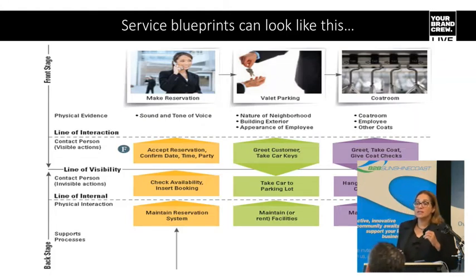Why highlight them? So that you know to fix them, so that you can mitigate the risk, or so that you've got a backup plan and you know what to do when things go wrong. That's one way that a blueprint can look — and they can look in lots of different ways.